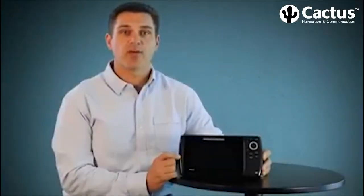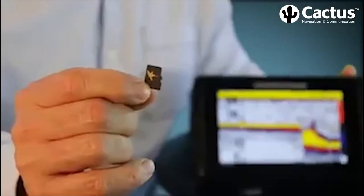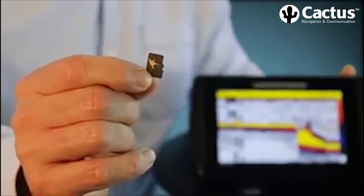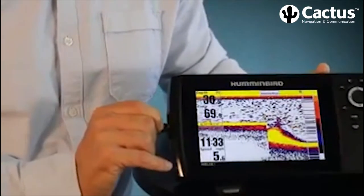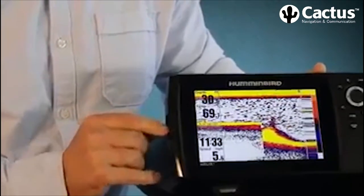The Helix 7 is compatible with Humminbird cartography such as LakeMaster and also with optional Navionics Gold, Silver and Hotmaps, all available now at your favorite retailer on microSD cards.